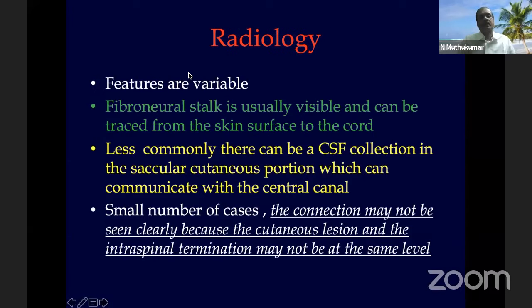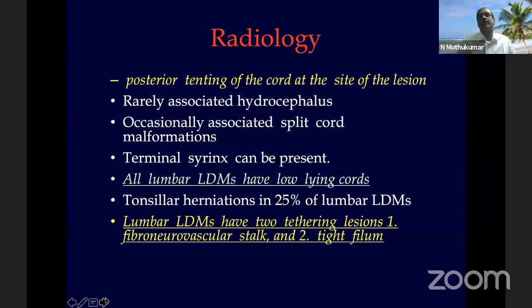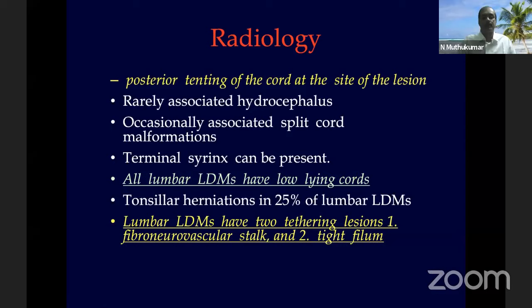Radiology is key to diagnosis and will show a fibroneural stalk connecting the cutaneous lesion to the spinal cord. In Type 2, a CSF space may be seen within this stalk. The most important diagnostic feature is the posterior tenting of the cord at the site of the lesion. LDMs can occur in cervical, thoracic, and lumbar regions. In lumbar LDMs, two tethering lesions exist: the LDM stalk and the tight filum. Both must be addressed for complete untethering.